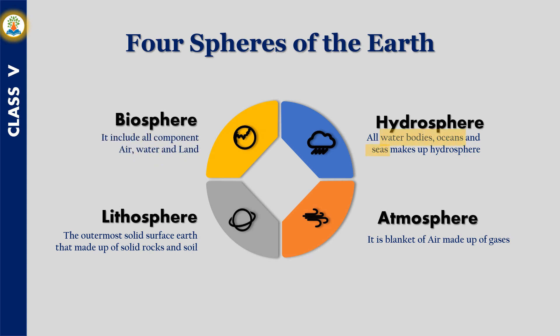All water bodies, oceans, and seas make up the hydrosphere. Atmosphere is the blanket of air made up of gases. Lithosphere is the outermost solid surface of Earth that is made up of solid rocks and soil.